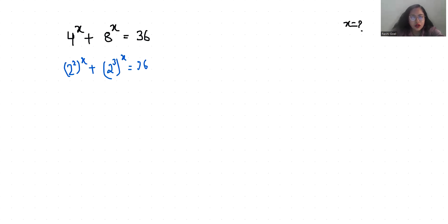Now according to exponent rule a power m power n, we can write it as a power n power m also. So 2 power x power 2 plus 2 power x power 3 equals 36.